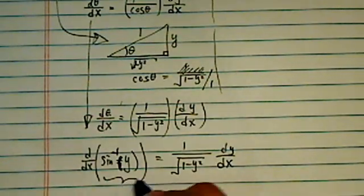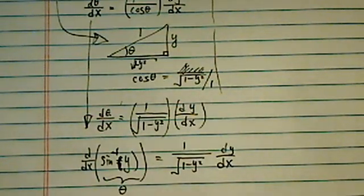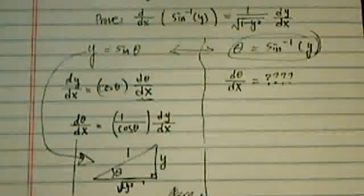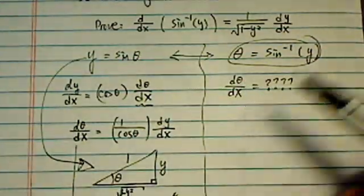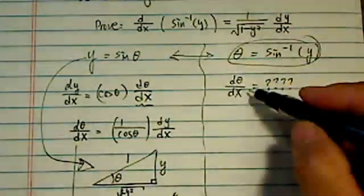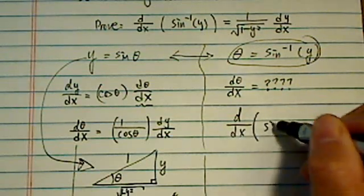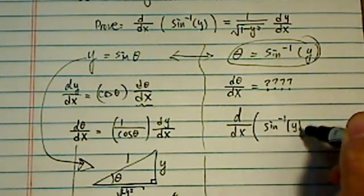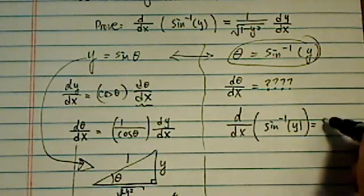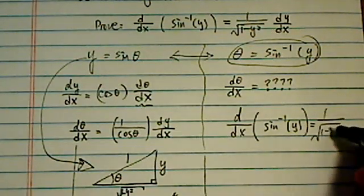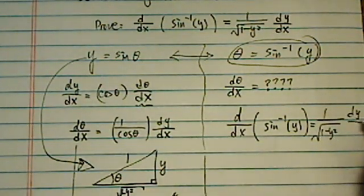This is my theta. Okay, so coming back to see, well, what's d theta dx? Well, d theta dx is really d dx, what's theta, let's plug it back in there, the inverse of y is equal to, well, 1 over y minus y squared dy dx.